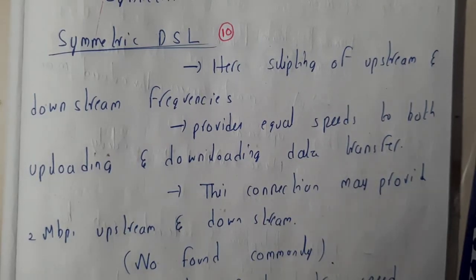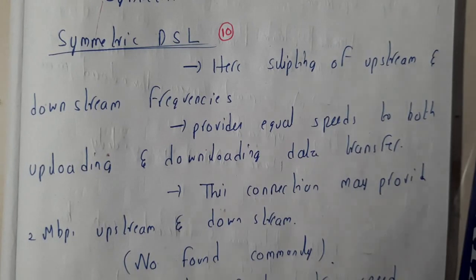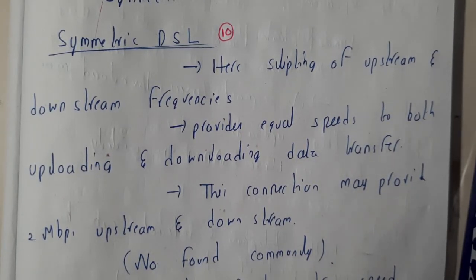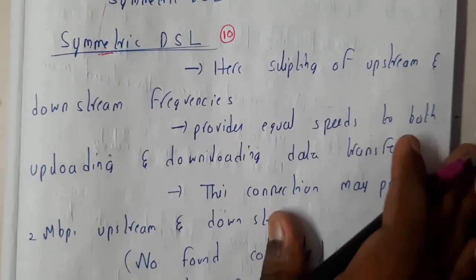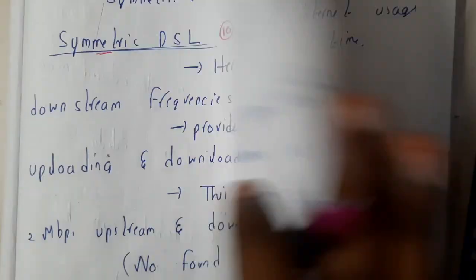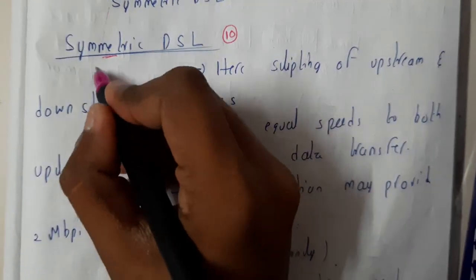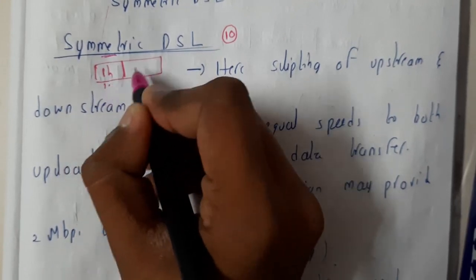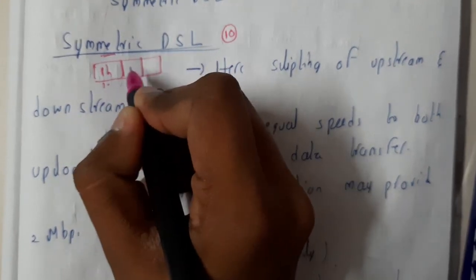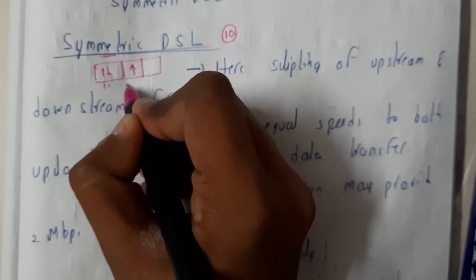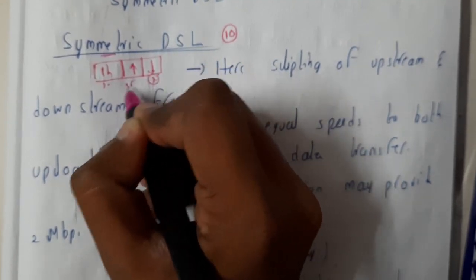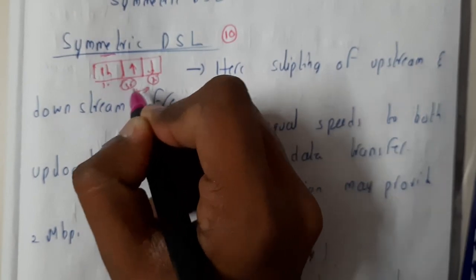Hello guys, we are back with our next tutorial. In this tutorial, let us go through Symmetric DSL. Symmetric means equal — the phone line will be given as usual, that is 30 percent, and we are having 70 percent of internet. The upload speed will be 30 percent and the download speed will also be 30 percent.